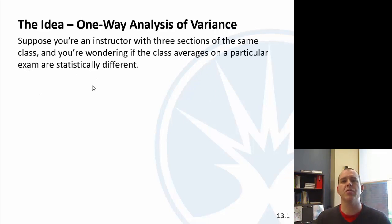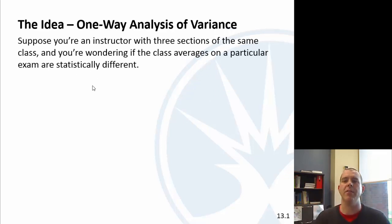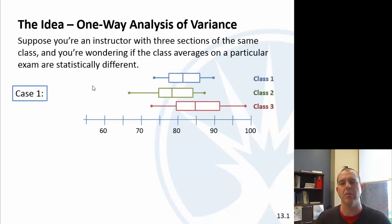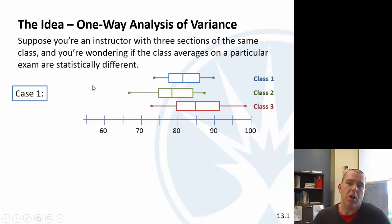Suppose you're an instructor teaching three sections of the same class, and you're wondering if the averages are statistically different. In case one, we've got class one, class two, and class three. The median for class three appears to be a little higher, and class two seems to be the lowest, but they're pretty spread out with a lot of overlap. They might be statistically different — they might not. It's certainly not visually obvious.